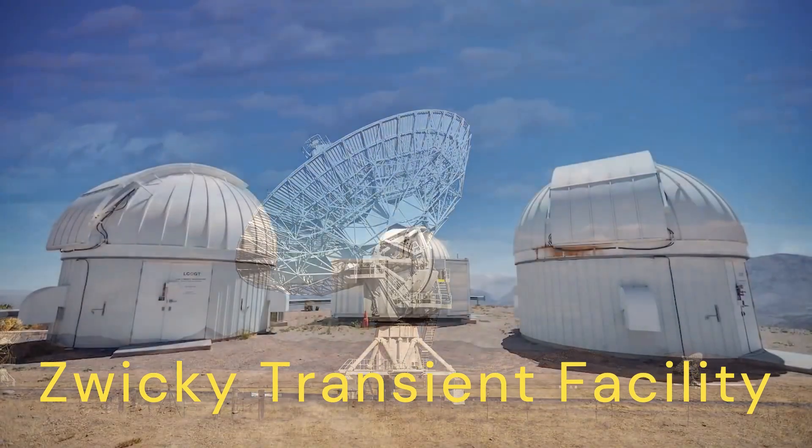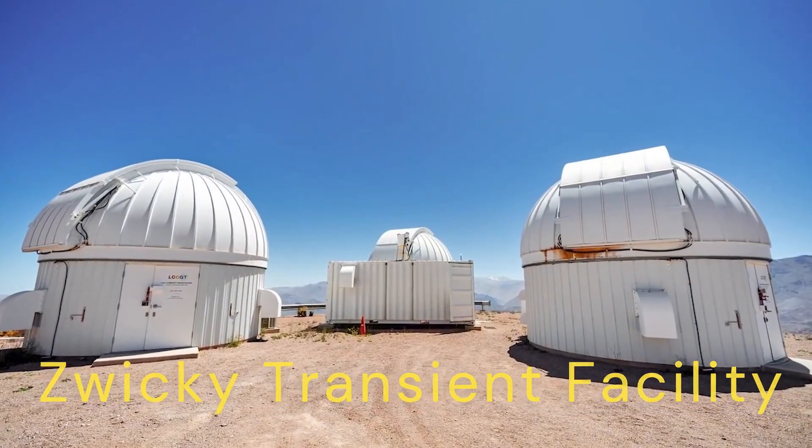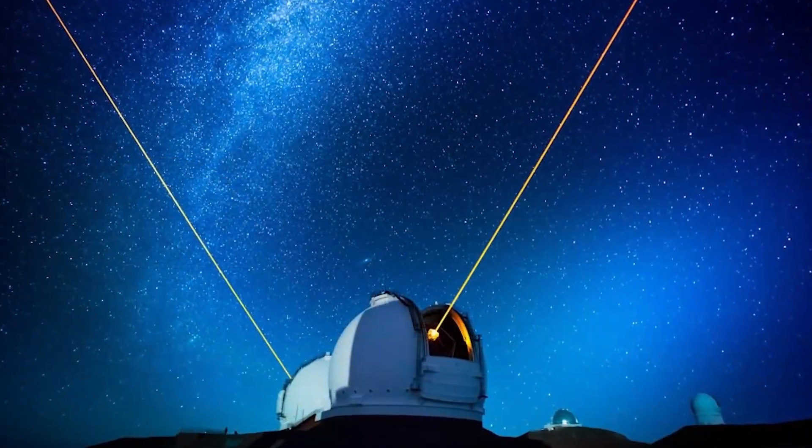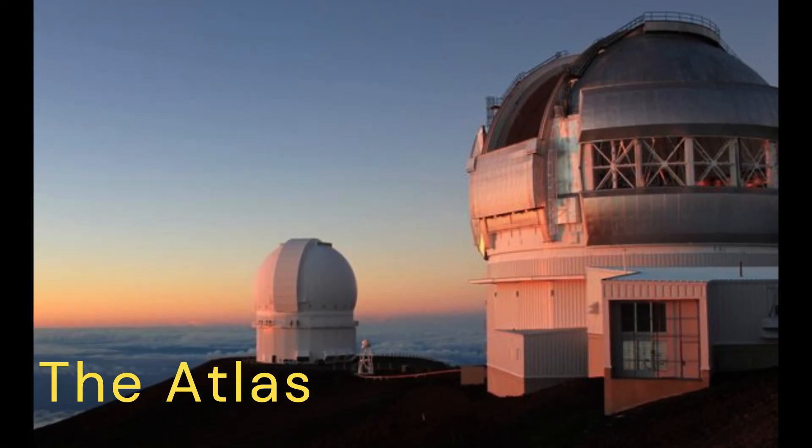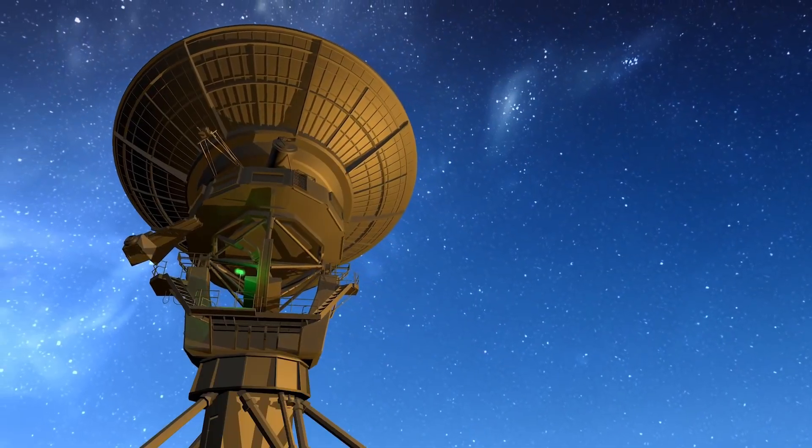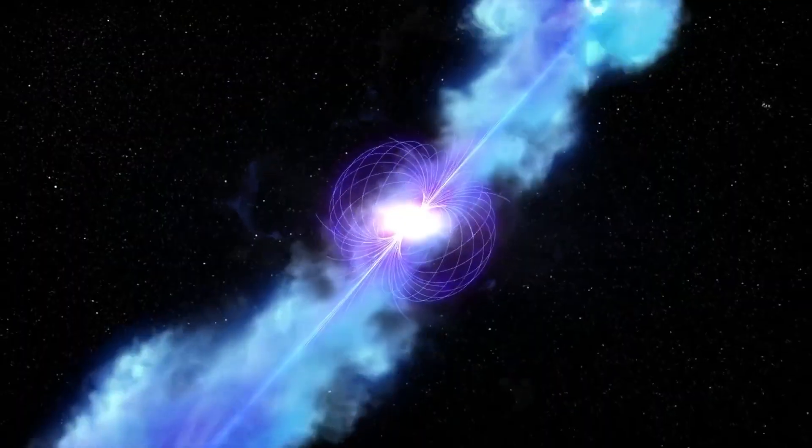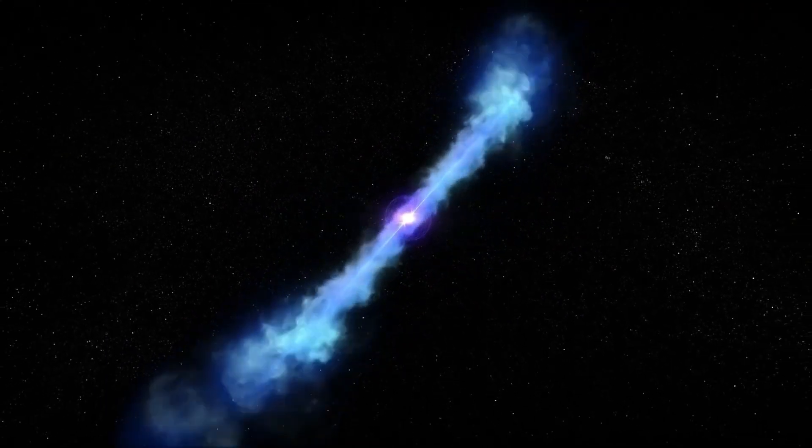The Zwicky Transient Facility in California first saw this cosmic phenomenon in 2020, followed by the Atlas based in Hawaii. These facilities tirelessly scan the night sky, detecting sudden changes in brightness known as transients.